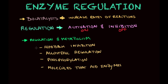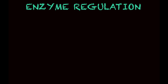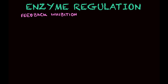These concepts are feedback inhibition, allosteric regulation, phosphorylation, and we're going to look at some molecules that help enzymes or that influence regulation somehow. The first concept I would like to discuss is known as feedback inhibition.